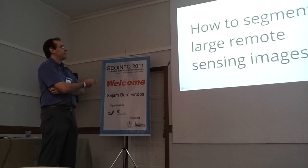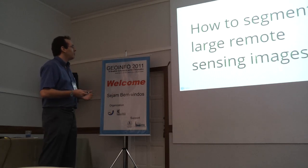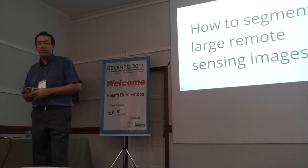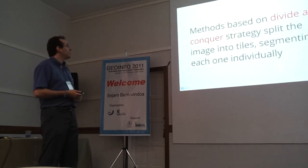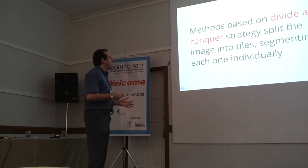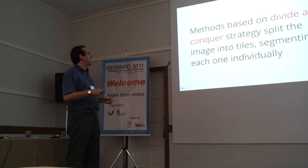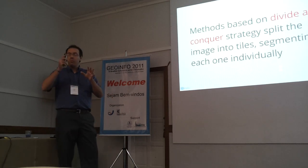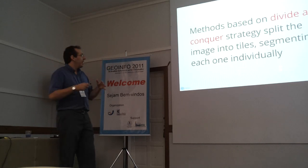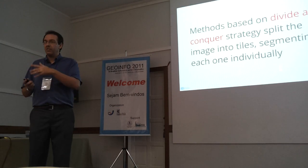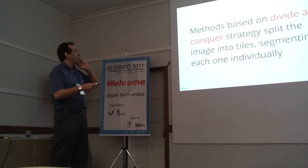So there is scope for improvement. This leads to the central question we are trying to answer: how do we segment large remote sensing images? Part of the answer lies in methods based on a strategy called divide and conquer, which can split a large image into tiles, segment each part individually, and then combine the results.